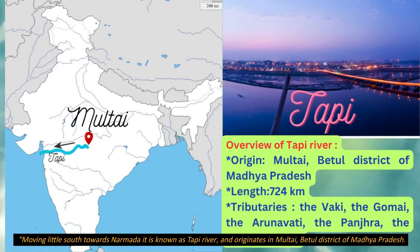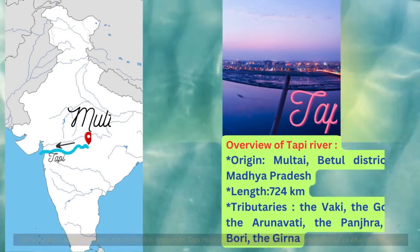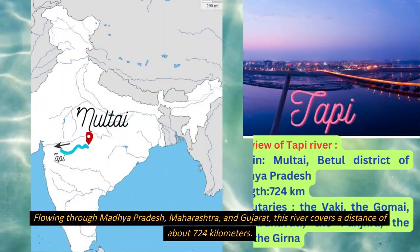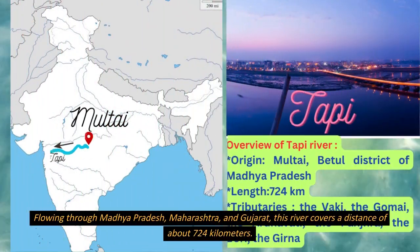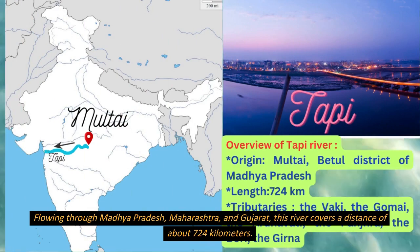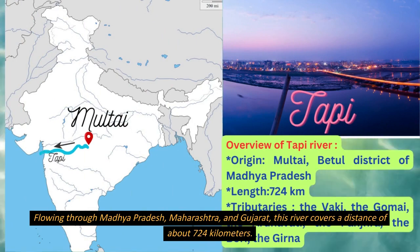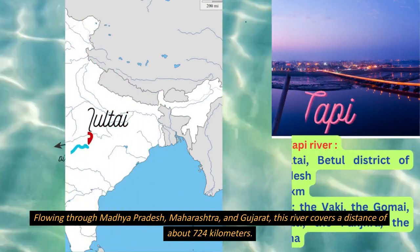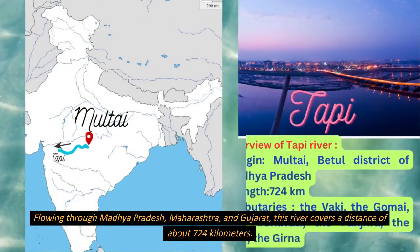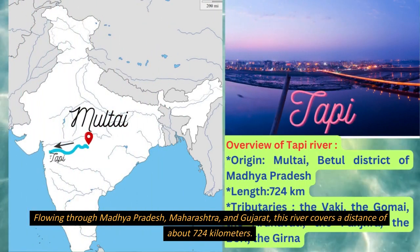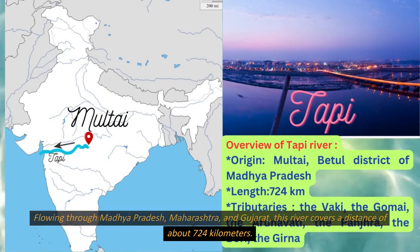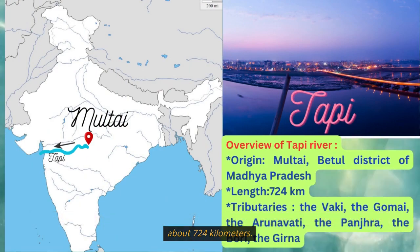Moving a little south, we come to the Tapi river, which originates in Multai, Betul district of Madhya Pradesh. The Tapi river flows through Madhya Pradesh, Maharashtra, and Gujarat, covering a distance of about 724 kilometers. The famous tributaries are Bhaki, Arunavati, Panjara, and Gomai, and so on.